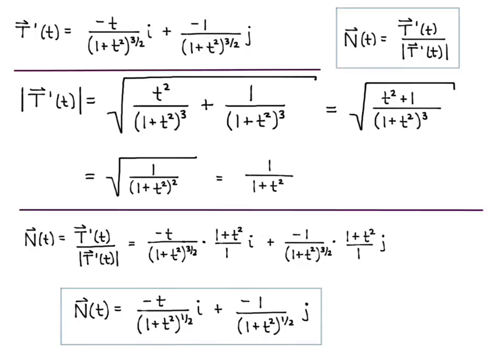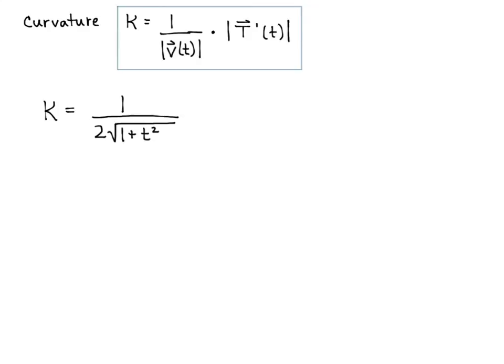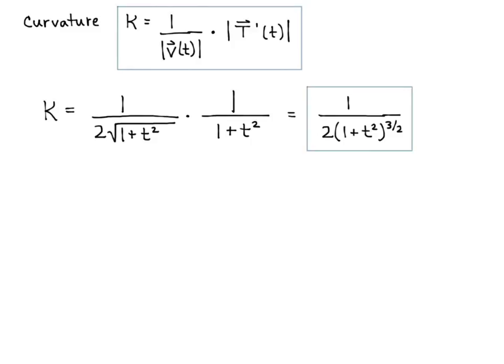The third part of the question asks for curvature. The curvature kappa equals 1 over the magnitude of velocity times the magnitude of the unit tangent derivative. We have all these pieces: kappa equals 1 over 2 square root of 1 plus t squared — the magnitude of velocity — times 1 over 1 plus t squared, the magnitude of T prime. Putting it together gives kappa equals 1 over 2 times 1 plus t squared to the 3 halves.